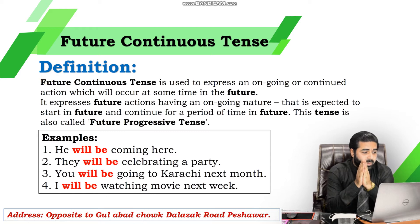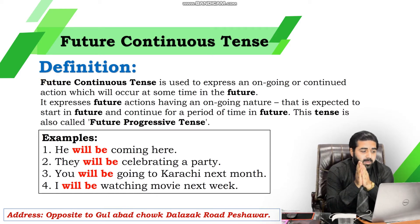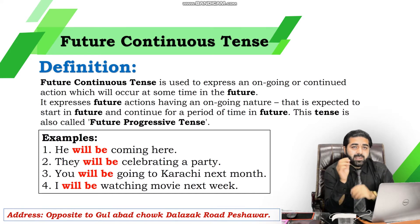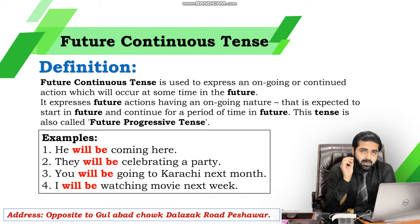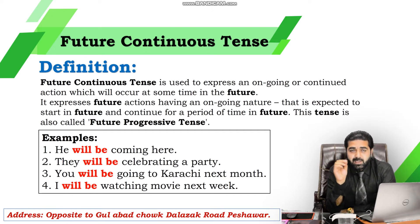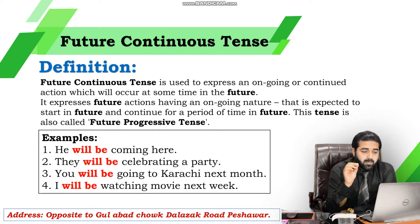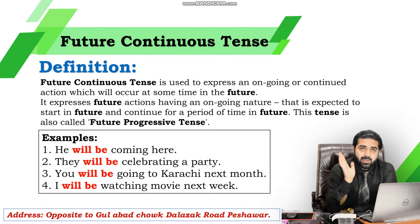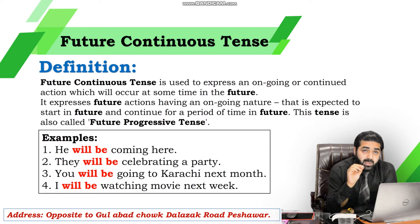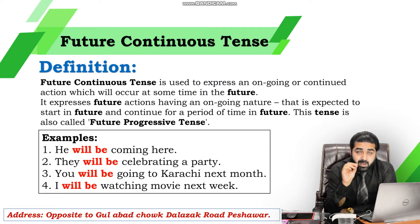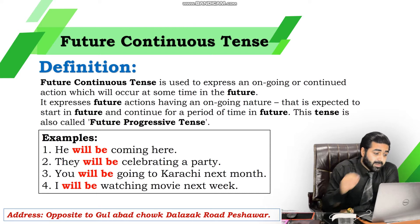If you focus on the name — Future Continuous Tense — it is the tense which continues in the future. وہ زمانہ جو مستقبل میں کچھ وقت کے لیے جاری ہو، اسے Future Continuous Tense کہتے ہیں۔ That's it. A tense which continues in the future for some time is called Future Continuous Tense.